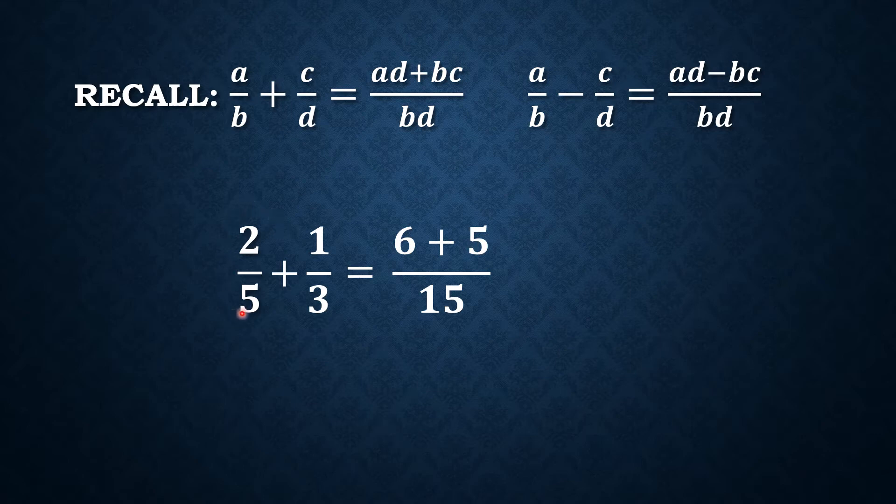So take note that 2 over 5 is actually the same as 6 over 15 because they are similar fractions. 1 third is also similar to 5 over 15. We did this so that we can perform the indicated operation. We can only do that if they have the same denominator.